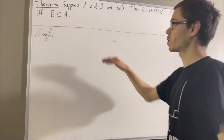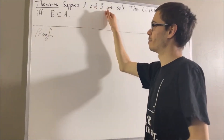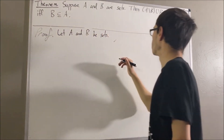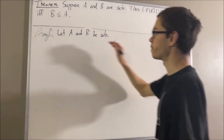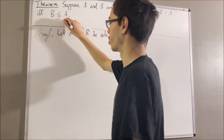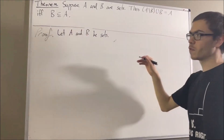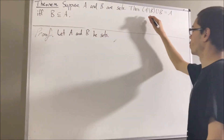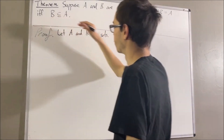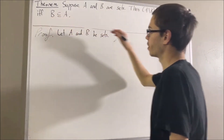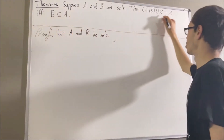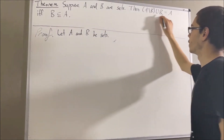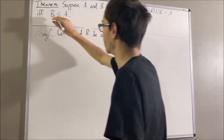So to start out the proof, let's give ourselves two sets A and B. Our goal is to prove this is true if and only if this is true. Since we're proving an if-and-only-if statement, we can prove each direction separately: if the union equals A then B is a subset of A, and conversely. Let's start by proving the forward direction.